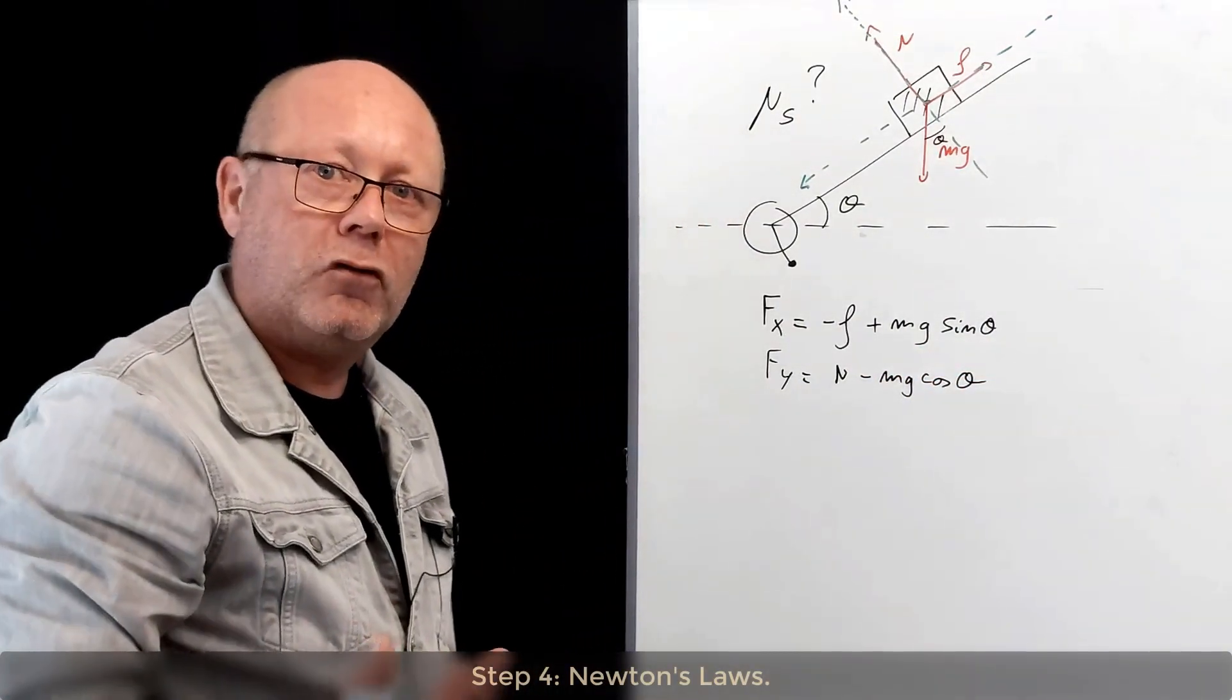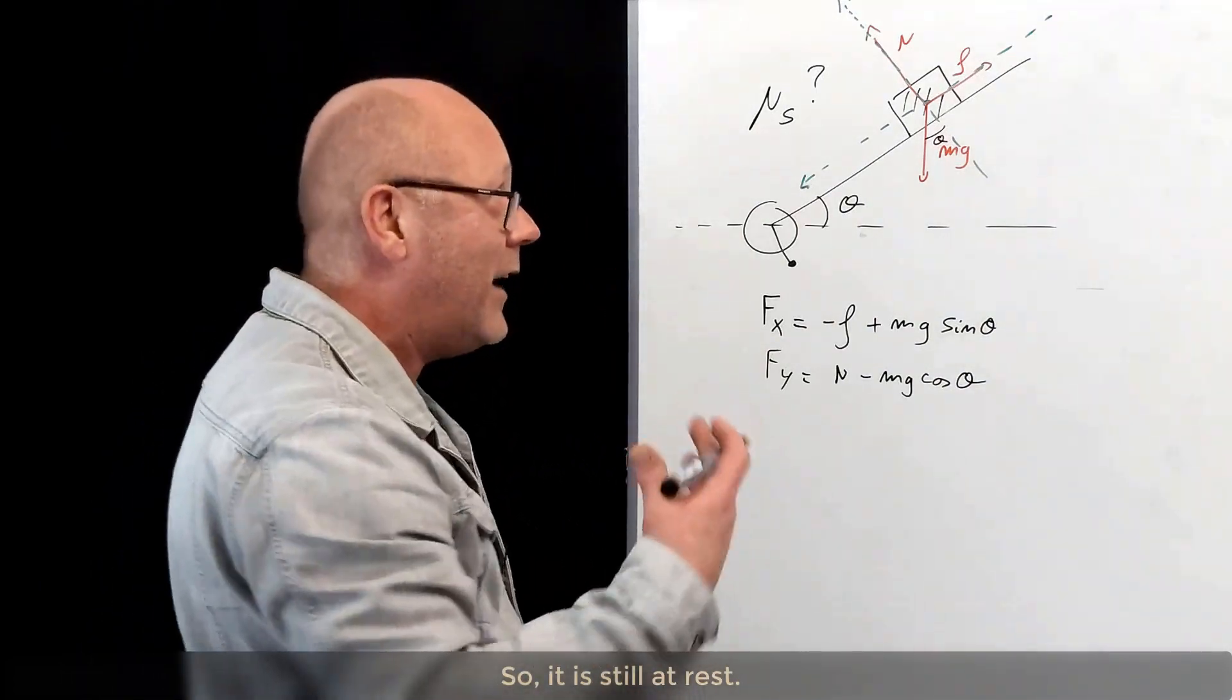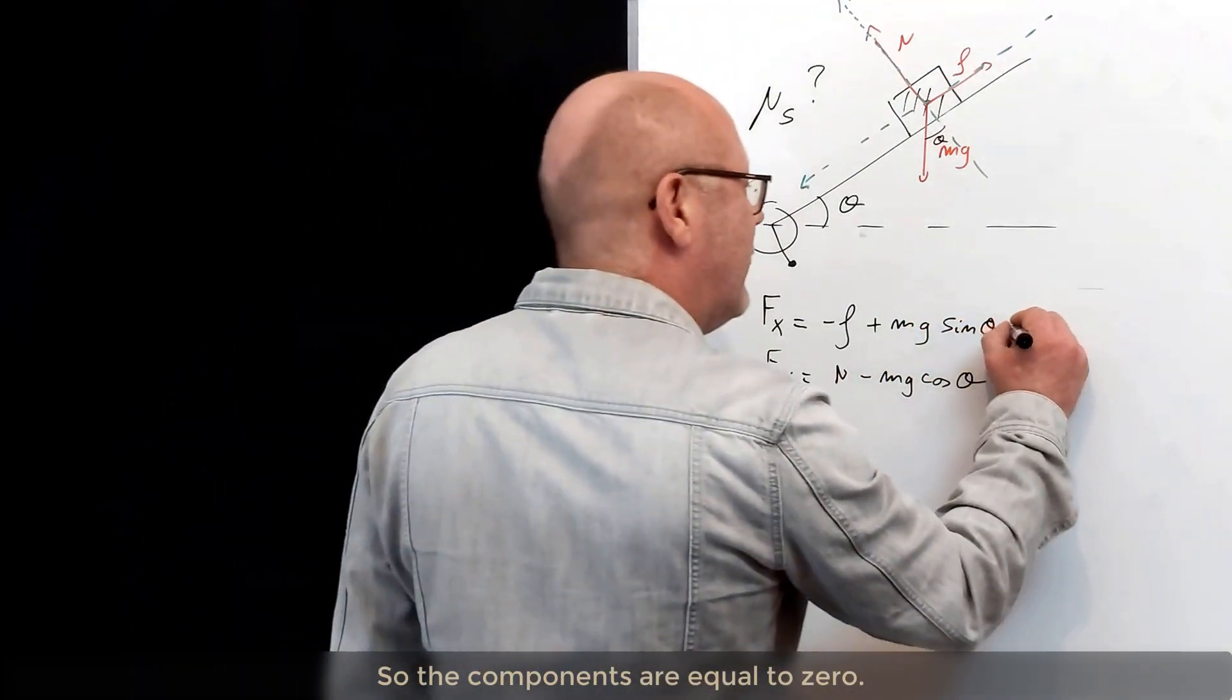Fy. Normal force. Minus mg cos θ. Step number four. Newton's laws. The box is about to slip. It's not actually slipping right now. So it's still at rest. Well, not for long if I increase θ, but now it's still at rest. So it's zero.